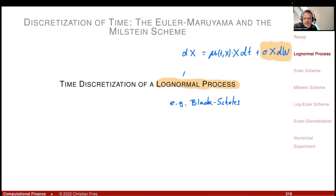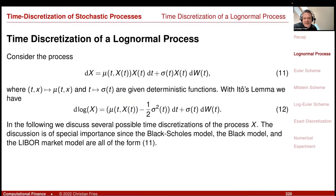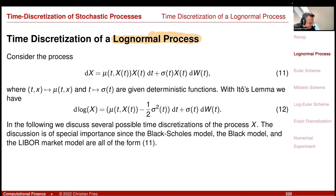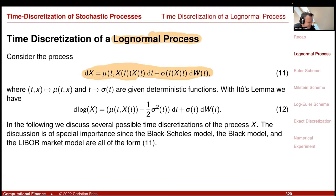Let's look at time discretization schemes for this special case — we will look at Euler and Milstein schemes, not predictor-corrector, but there will be a third one. If we consider the log-normal process dx = μ(t,x)·x dt + σ(t)·x dw, where σ is a deterministic function that may depend on time but not on x, the only x-dependency is through this additional multiplicative factor.